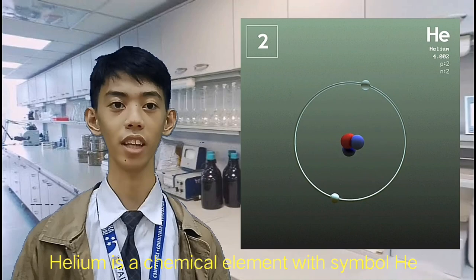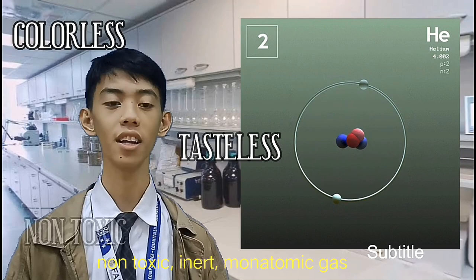Helium is a chemical element with symbol He and atomic number 2. It is colorless, odorless, non-toxic, inert, monatomic gas.